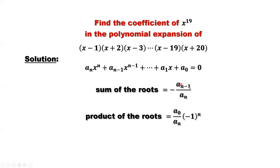If you know this result, this question is not that difficult. Now, in our case, how many items are here? 20, right? From one to 20. So the highest power is 20, meaning this is A20. The next one is A19. What do we need to find? A19 — we want to find A19 in the polynomial expansion of this expression.